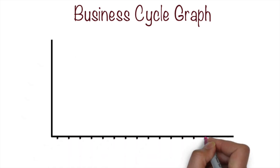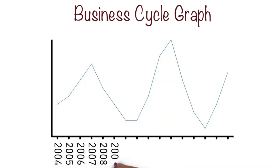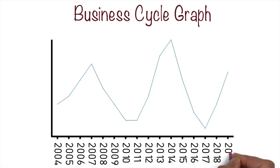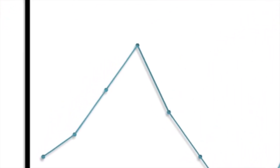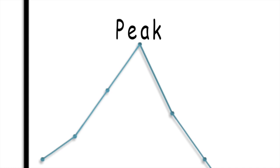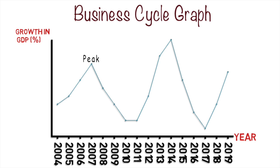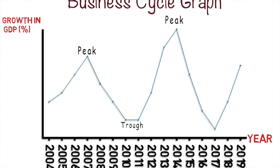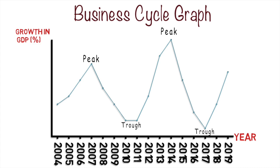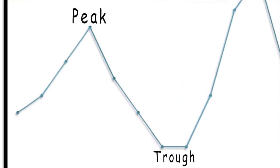The easiest way to show this is through a business cycle graph. On this graph we have years along the x-axis, which we call time, and on the y-axis we have growth in GDP in percentage terms. The business cycle tracks growth in output over time. Sometimes we see a peak — the highest point of GDP output growth — and sometimes we see a trough, which is the lowest point of GDP output growth.